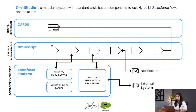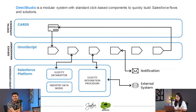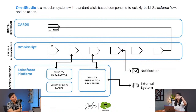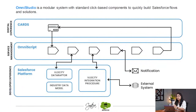You can do external system connection without code. You don't have to write any API for that. You can configure it in named credentials and then just call it using your Integration Procedure. Integration Procedure is another tool. Under that there are different actions like email action, HTTP action, remote action, and response action, which you can configure in a point-and-click sequence.